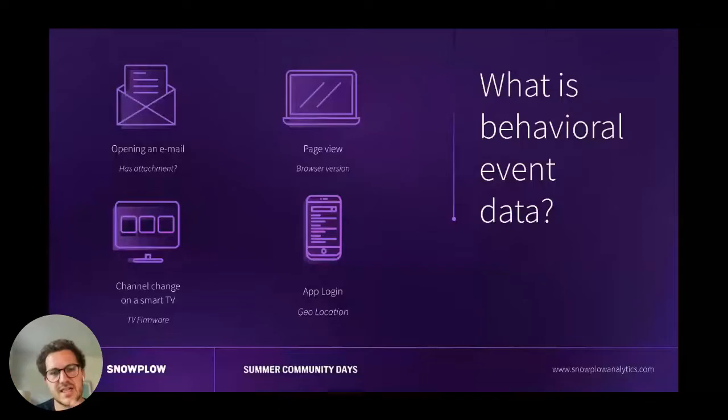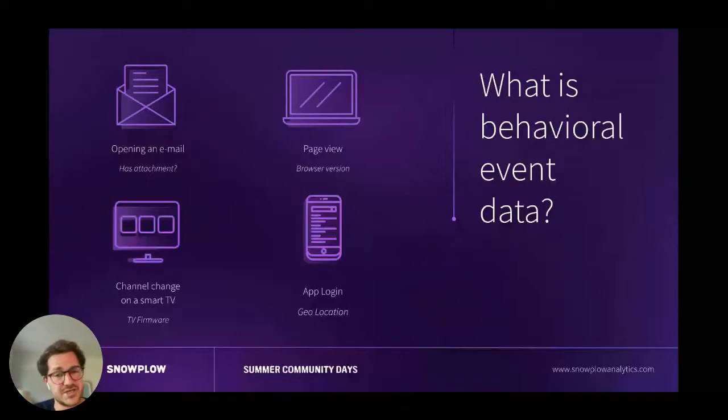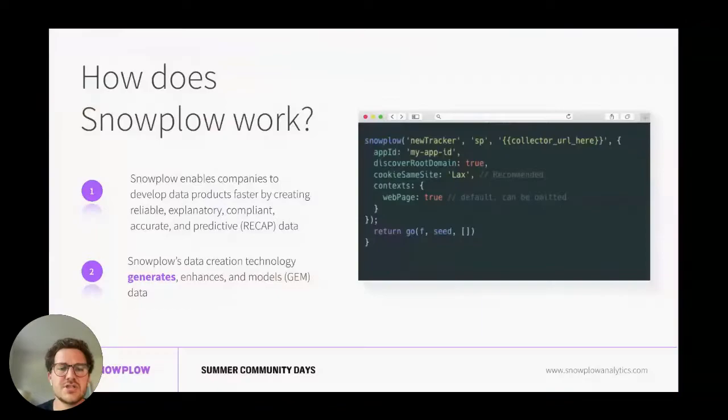Same with a page view — when you visit a website, you can capture what page you visited, browser version, IP address, cookie consent, and more. Changing channels on a smart TV: what was the firmware, what app were you in, how did you get to this channel? And logging into a mobile app: was geolocation enabled, Wi-Fi, battery level, 5G or 4G, roaming — all that could be contextual data.